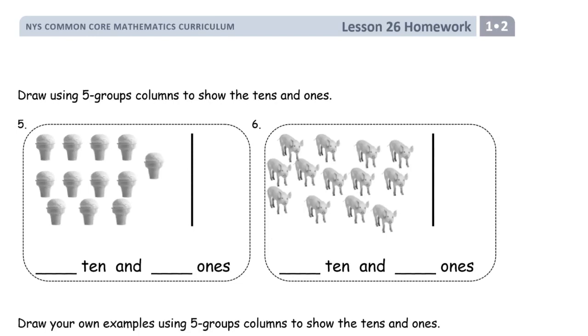Lesson 26, we've got more homework here, and all of this is just getting us ready to think about place value, 10s and 1s, and groups of 10, making teen numbers. Just like we practice the say 10 way in school, we're going to show the 10s and 1s using 5 group columns now instead of 5 group rows.